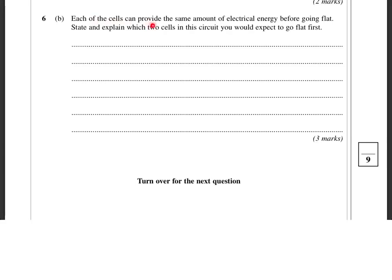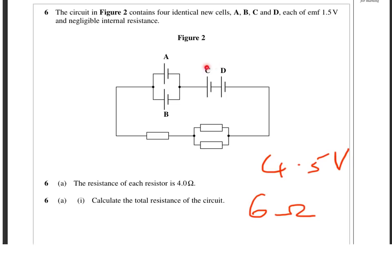It says, each of the cells provides the same amount of energy before going flat. State and explain which two cells in the circuit you would expect to go flat first. So state and explain three marks. Well, let's start by having a quick look at the circuit again.